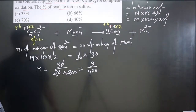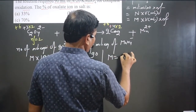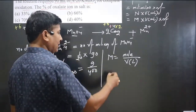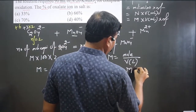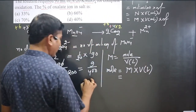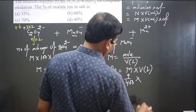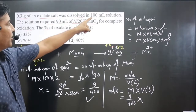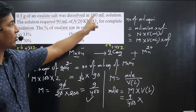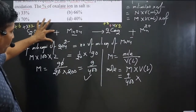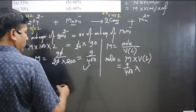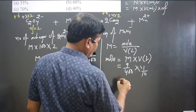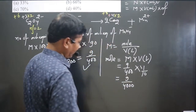Applying the molarity formula: moles = molarity × volume in liters. Molarity is 9/400, and volume is 100 mL = 0.1 liters. So moles of oxalate ion = 9/400 × 0.1 = 9/4000. These are the moles of oxalate ion present.